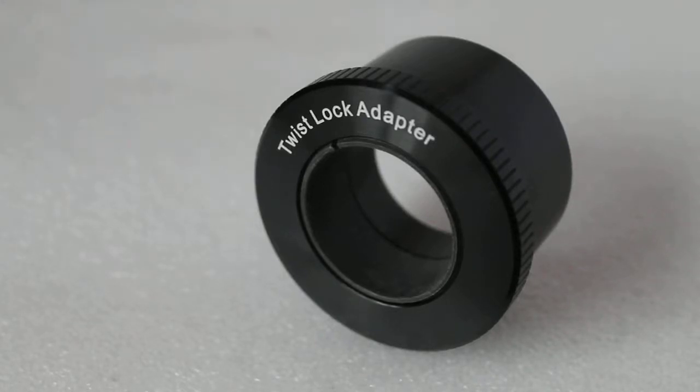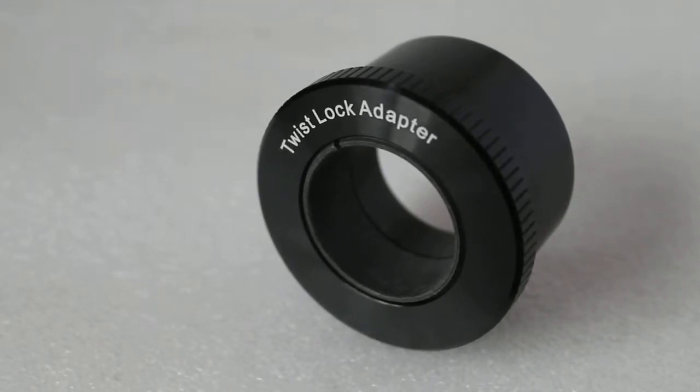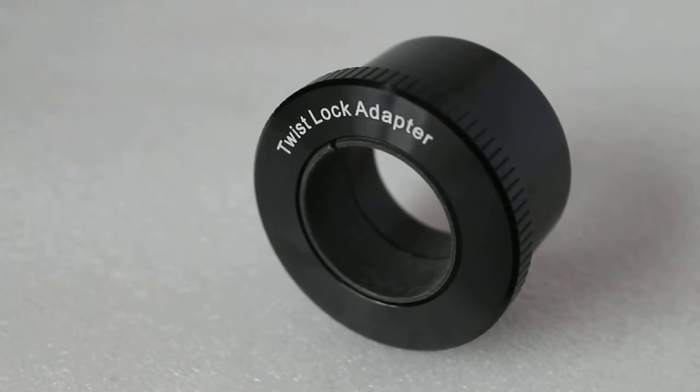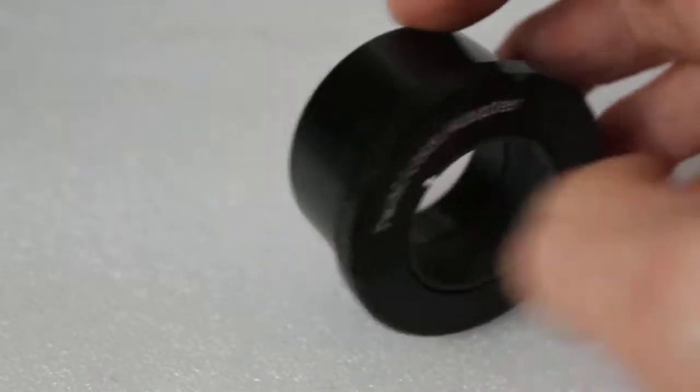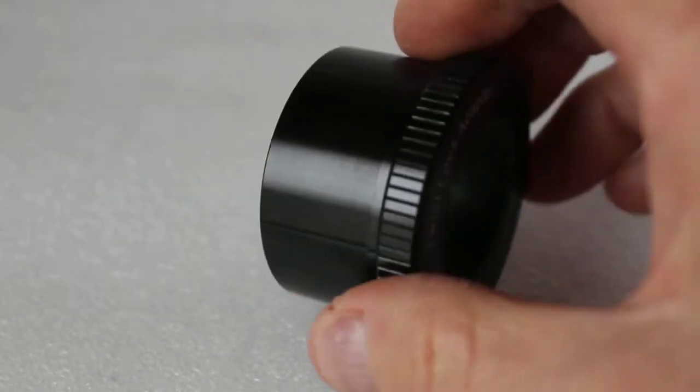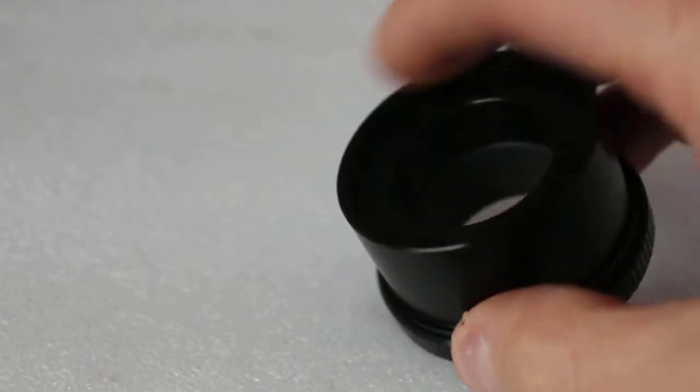Howdy everyone, and today we're having a quick look at the Sky-Watcher twist lock adapter. This is a two-inch to one and a quarter inch adapter. We have solid metal construction threaded for two-inch filters there.